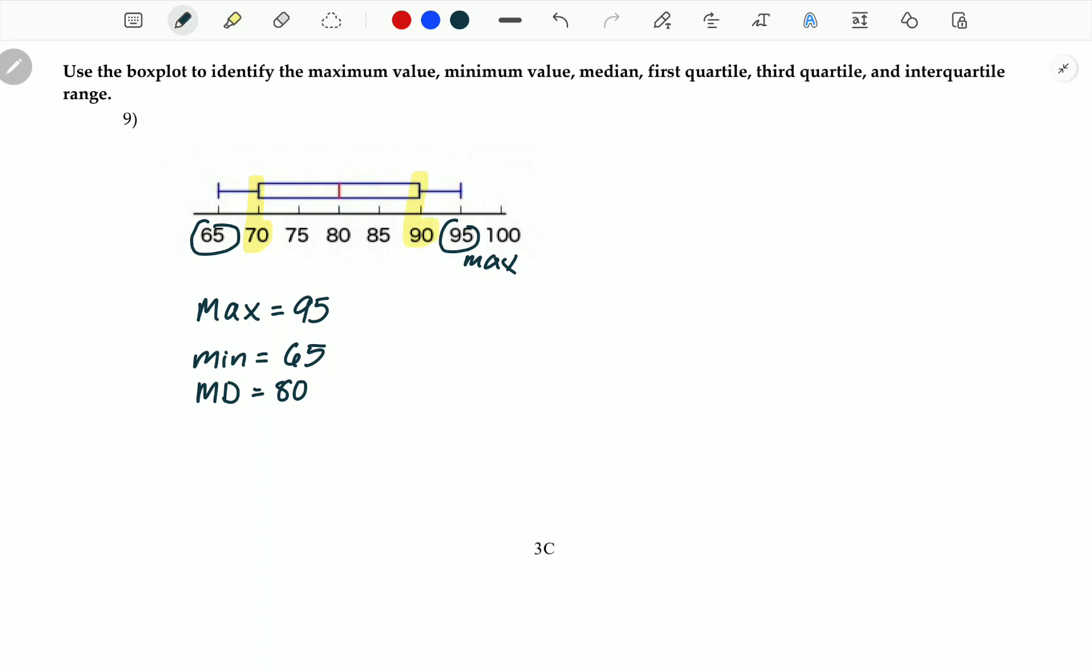Let's label each of those. This is the median. This is Q1. This is Q3. 70 is Q1. 90 is Q3.